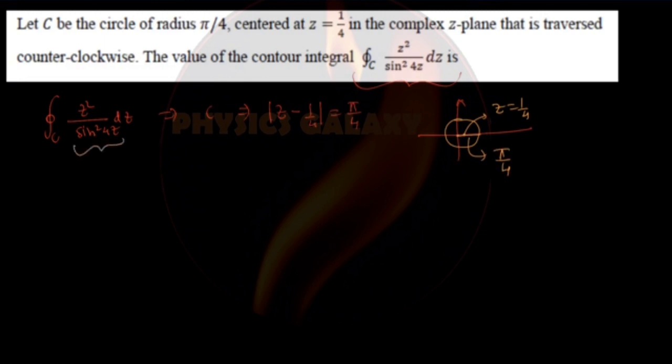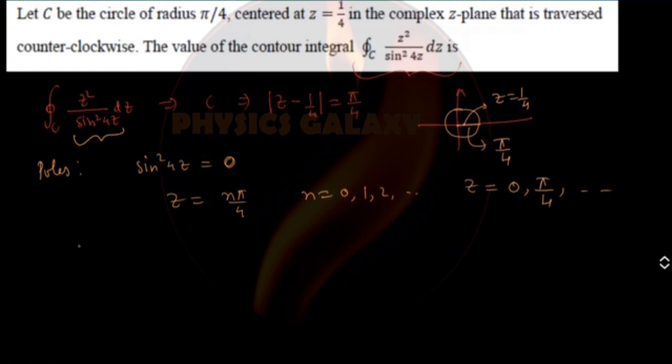From simple contour integration, we know that we first find out the poles. We are putting the denominator equal to zero, and after this you will realize that z = nπ/4 where n is 0, 1, 2, and so on. So z will be zero, π/4, and so on. Zero and π/4 are within the circle, and you will realize that z = 0 is not actually a pole.